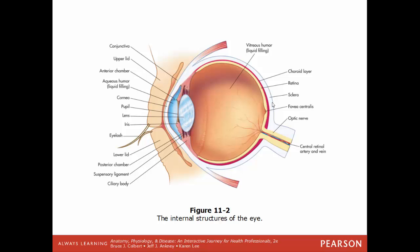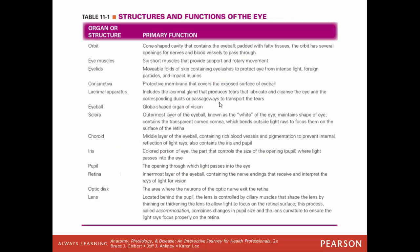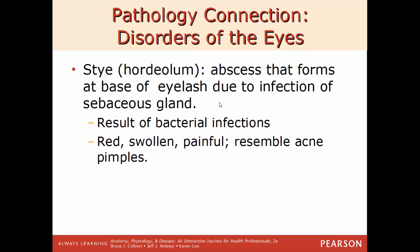Here is a summary table of the structure of the eye and its functions, covering everything from the orbit and the cavity itself down to the lens.